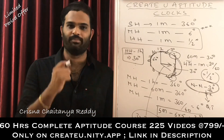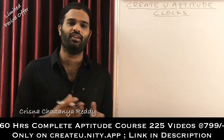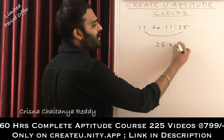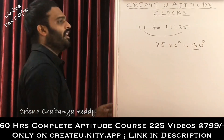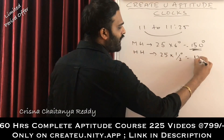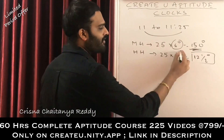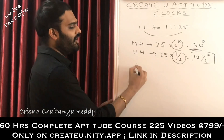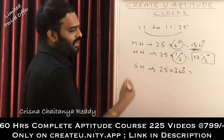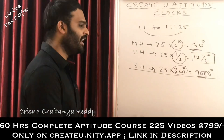Let us try more calculations. If someone asks how many degrees the minutes hand will cover from 11 o'clock to 11:25, that is 25 minutes — and the minutes hand covers 6 degrees per minute — so the answer is 150 degrees. For the same time period, the hour hand covers 0.5 degrees per minute, so it covers 12.5 degrees. For the seconds hand, 25 minutes would be 360 × 25 = 9000 degrees, which is meaningless since angles can't exceed 360 degrees.